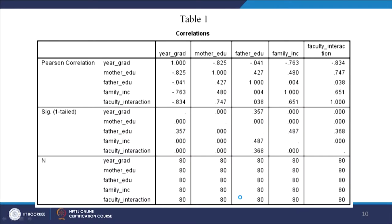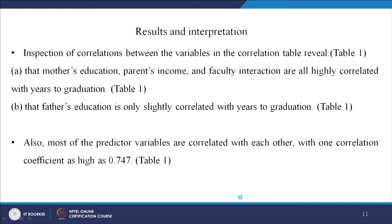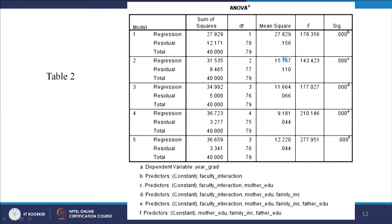Looking at the coefficients table, faculty interaction has t = –13 in model 1 and becomes non-significant by model 4, so it is removed in model 5. The correlation table confirms: mother's education, parents' income, and faculty interaction are all highly correlated with graduation; father's education has only slight correlation (0.04). Most predictor variables are correlated with each other — the highest inter-predictor correlation is 0.747 between faculty interaction and mother's education. Yet in the final model, the highest correlating predictor with the dependent variable has been removed. This is the problem with stepwise regression.